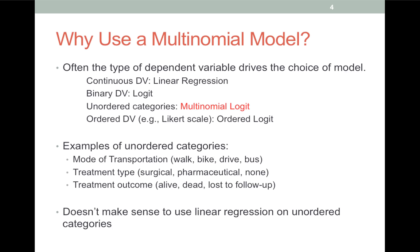Similarly, you might be modeling how a disease, based on patient and doctor characteristics, drives the type of treatment used — whether surgical, a drug, or no treatment at all. And sometimes treatment outcomes have a third possibility: the patient is lost to follow-up. You want to allow that possibility because those people may not be a random selection and can't just be ignored.